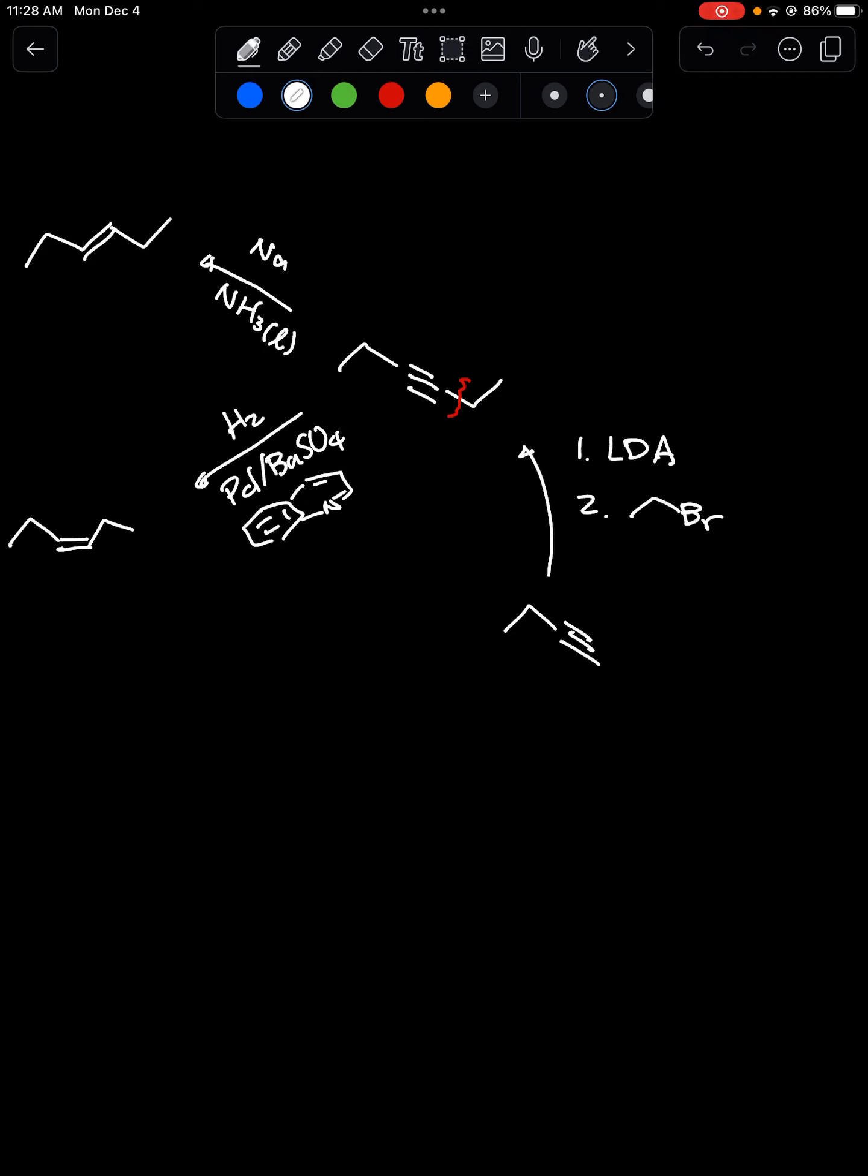This terminal alkyne now could then be formed from vicinal dihalide like this. You would need excess of strong base and then you need to protonate the alkyne resulting alkyne ion so it becomes neutral.